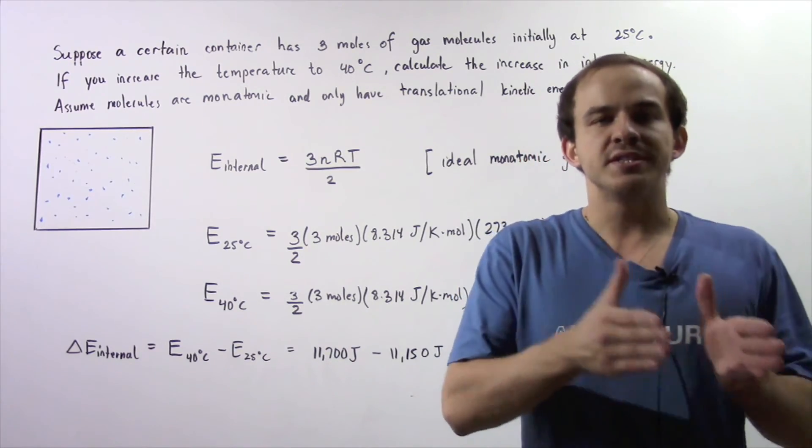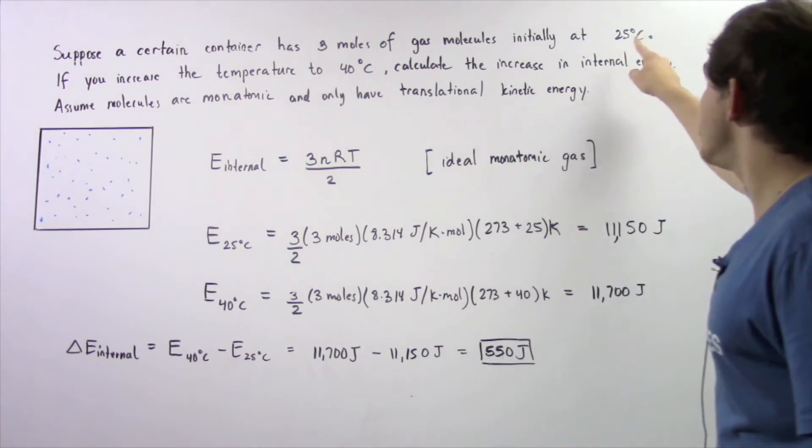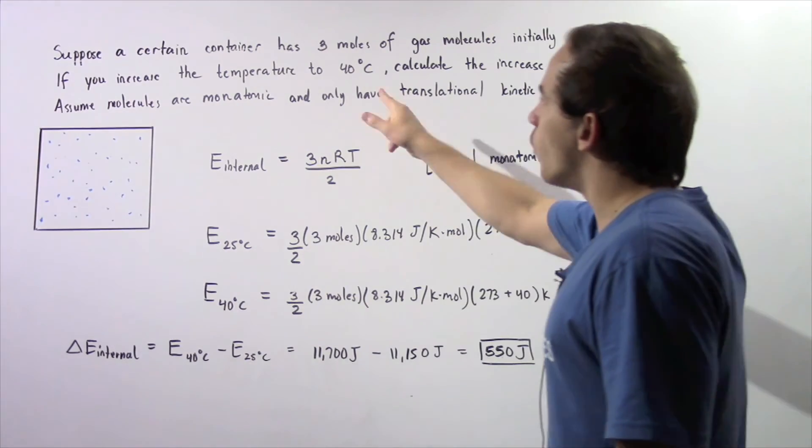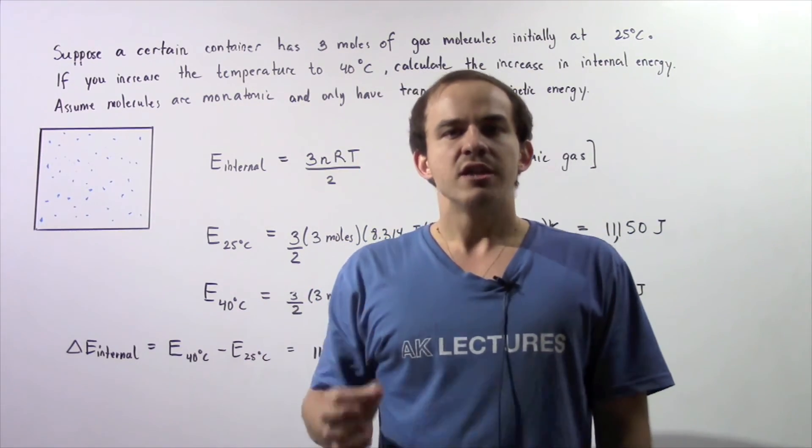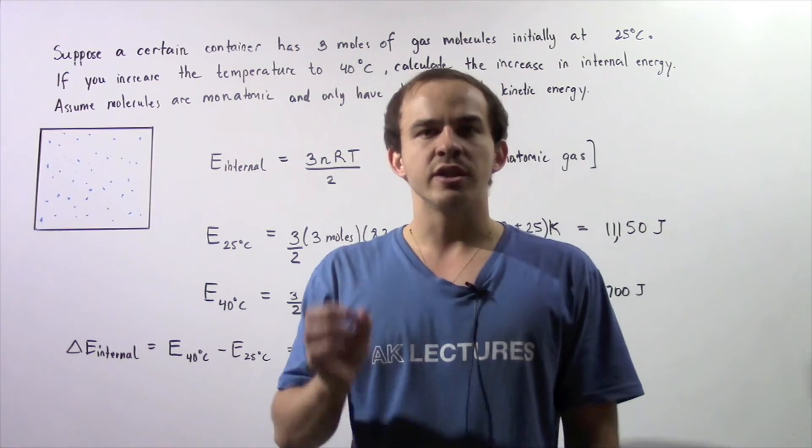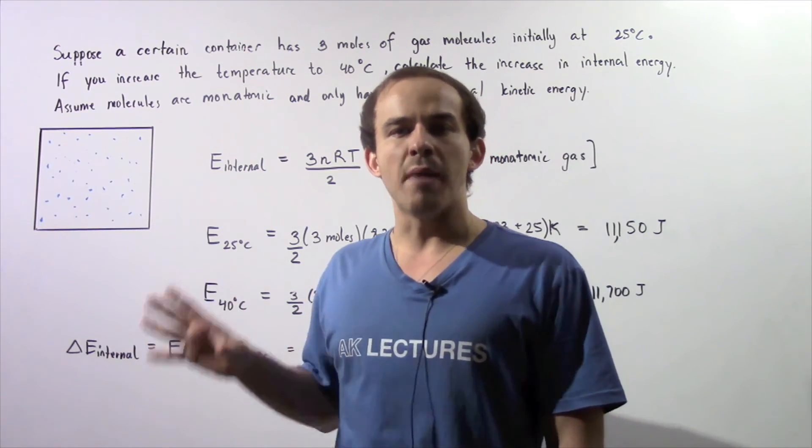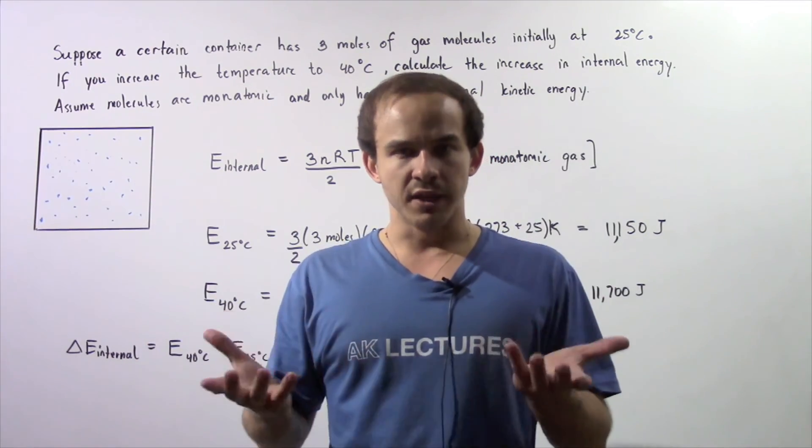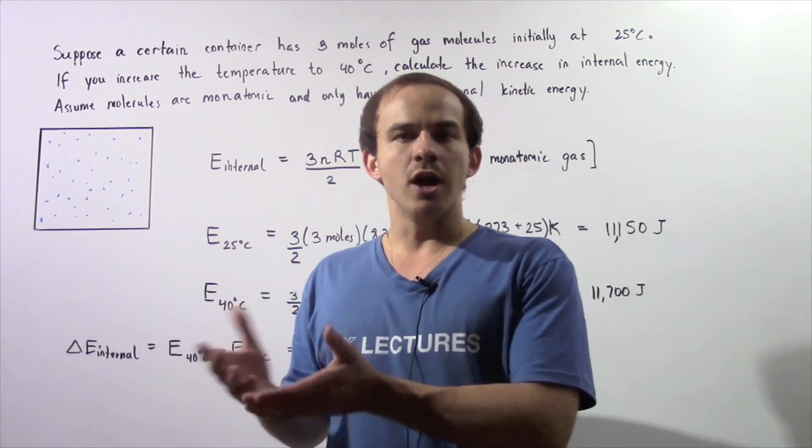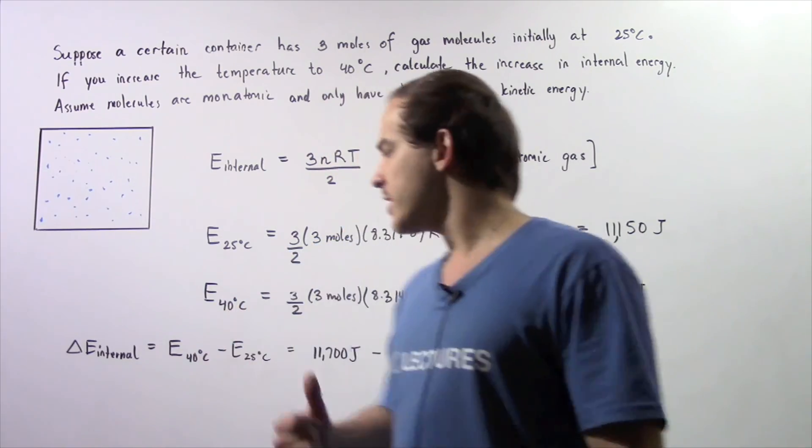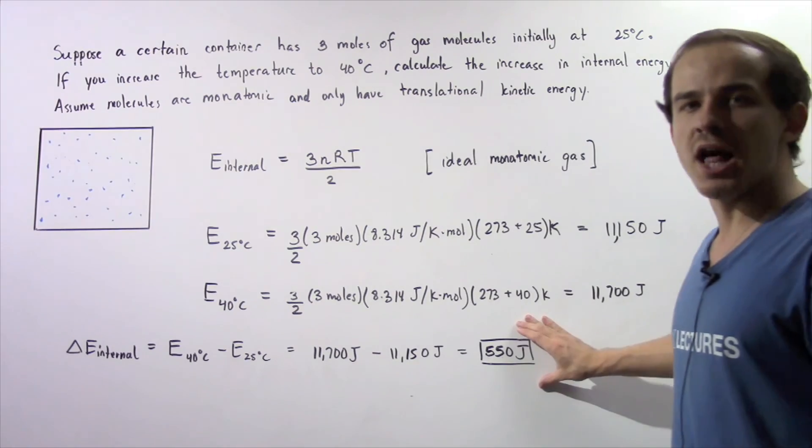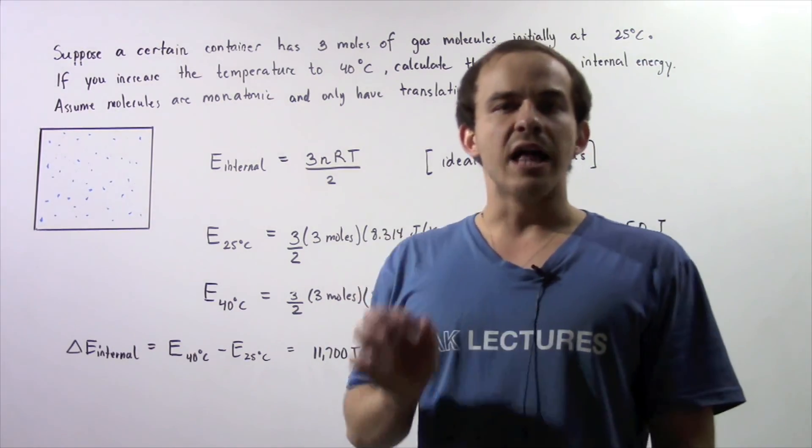So when we increase the temperature from 25 degrees Celsius to 40 degrees Celsius, we increase the average translational kinetic energy of all the molecules. So collectively, the internal energy of our gaseous system increases by this quantity as a result of the increase in velocity.